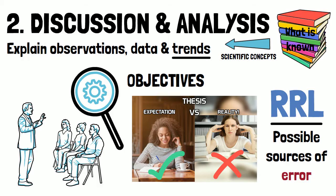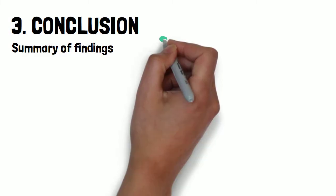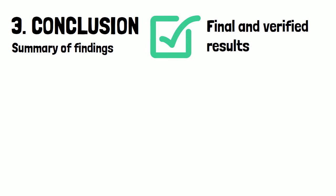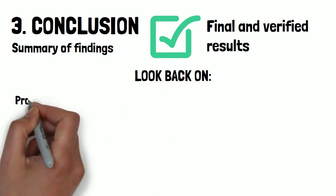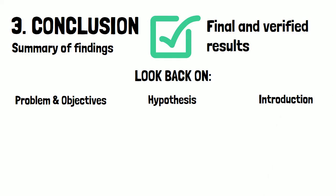After establishing these connections of your results to your past RRL and hypothesis, it is time to offer a summarized version of all of your findings through the conclusion. This is a general statement about your study, stating the final and verified results. It is important to look back on two previous sections in composing this: the problem statement and objective section, the hypothesis, and your introduction. In looking back at your problem statement, it is important to compare your results to the initial objectives you made months ago.